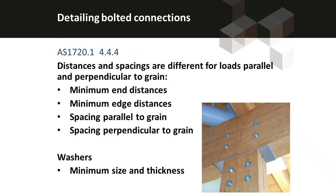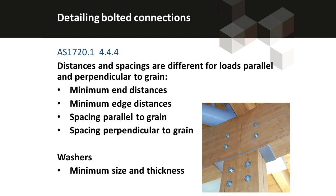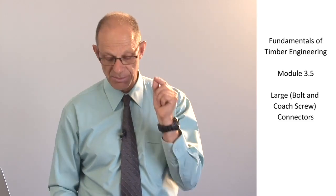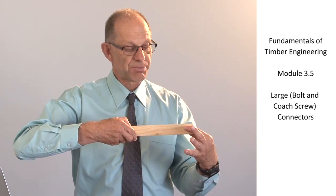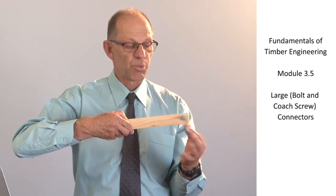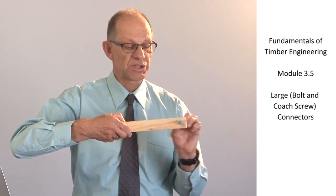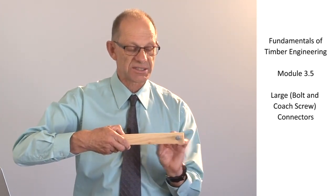Now detailing in bolted connections. There are minimum end distances, spacings and edge distances for bolted connections but all of them are related to the direction in which the load is applied. The standard gives different values for the spacings, edge distances and end distances depending on whether the load is applied parallel to the grain or perpendicular to the grain. So if the load is applied perpendicular to the grain we're aiming to minimise the effect of splitting and we use different edge distances, end distances and spacings for those configurations.